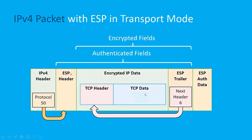In transport mode, there's only the single IPv4 header which isn't changed. So you have the IPv4 header here, protocol 50, pointing to the fact that we're using ESP and the ESP header is added. There's also an ESP trailer, and the ESP trailer tells us that the next header to look at is the TCP header in the encrypted IP data. So once this is decrypted, we'll have a TCP header next.